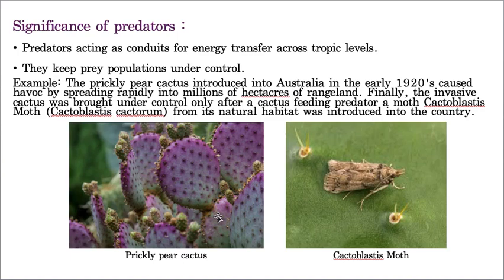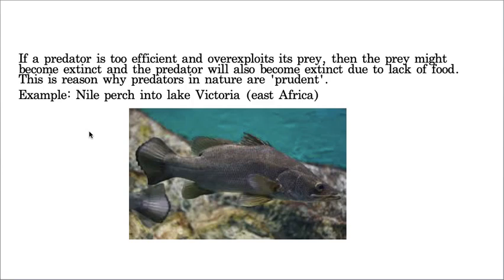Some predators have a tendency to over-exploit. The Nile perch, introduced into Lake Victoria, was over-predaceous and ate up completely all the herbivorous fishes in that lake. By introducing just one species, it led to the disappearance of many herbivorous species — showing how voracious and greedy a feeder the Nile perch is.